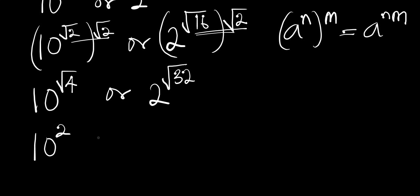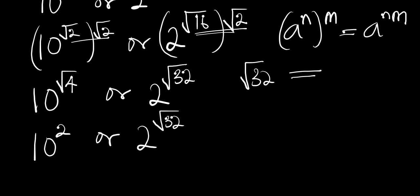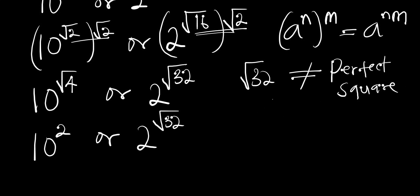Now we have 10^(√4) = 10^2 versus 2^(√32). Since √32 is not a perfect square, the next perfect square above it is 36, and √36 = 6. So we are going to use √36 instead of √32 to help us find which number is bigger.